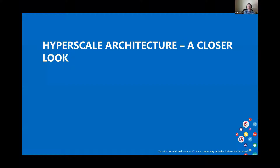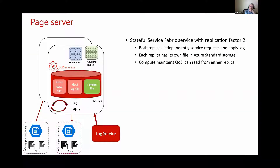Let's take a closer look at Hyperscale architecture. Our next topic is inside a page server. A page server is a stateful Service Fabric service with replication factor two. Azure SQL in general — not just Hyperscale — runs on top of Service Fabric, an infrastructure platform that provides high availability, management, redundancy, load balancing, and all the things needed to run a distributed service in the cloud. A page server is an application on top of Service Fabric, and replication factor two simply means there are two replicas for a page server on different nodes — for availability and performance reasons, working as an active-active pair.